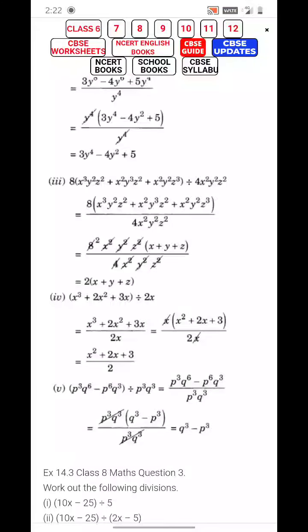For x³ plus 2x² plus 3x divided by 2x, x is common. x gets cancelled and the rest is your answer.